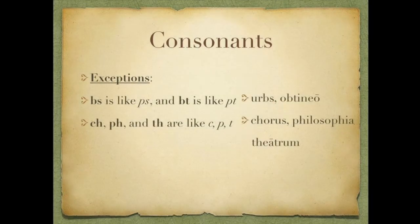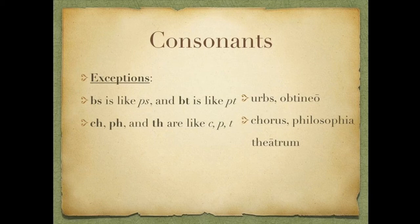A couple more exceptions: the BS sound is pronounced like PS, and BT is pronounced like PT — so we would say urps and optineo. CH, PH, and TH are almost pronounced like they don't have the H sound after them — especially in English when we see words like chorus, philosophia, theatrum. It's really a C sound with a little breathing after it, or a P or T sound with a little breathing. Don't worry about it too much — we'll do the best we can.